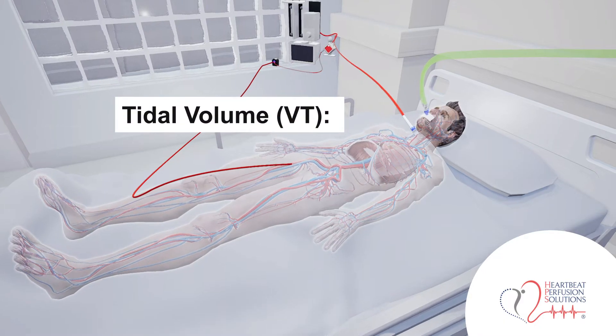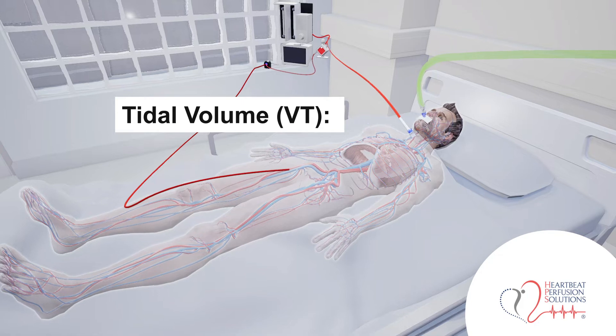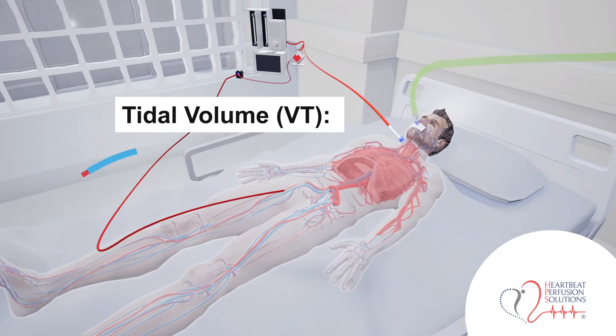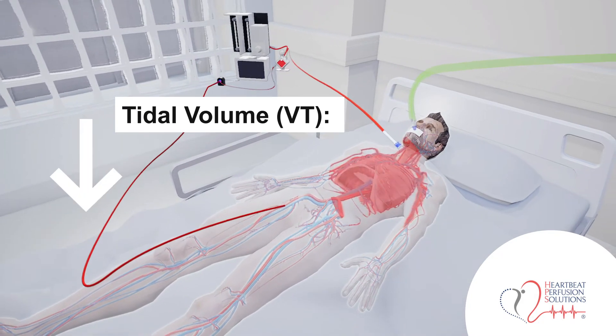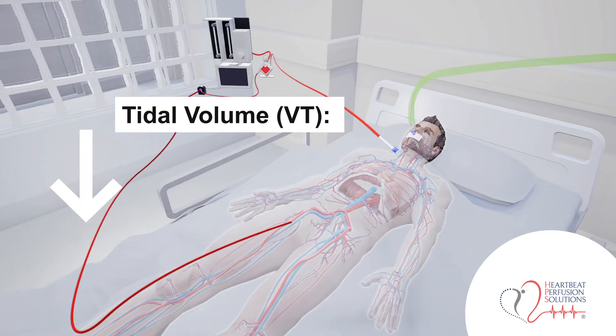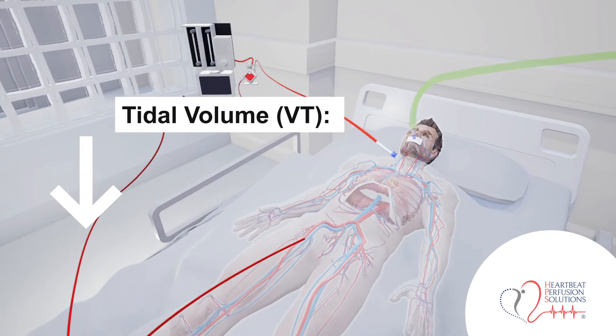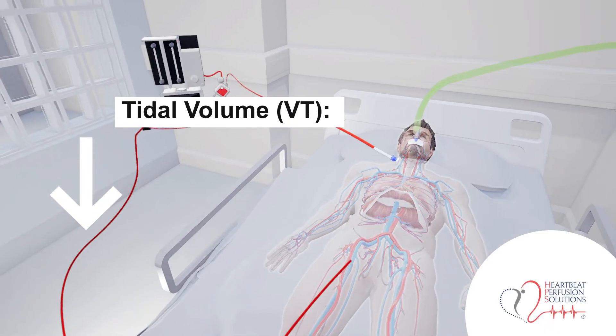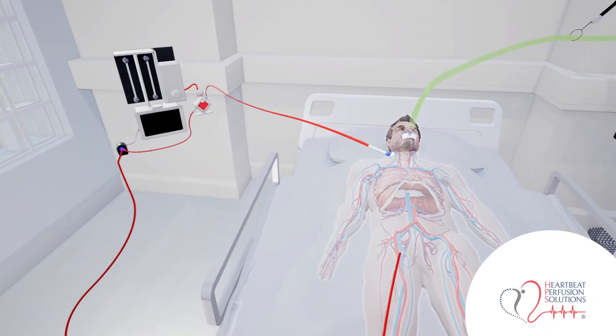Tidal volume, also known as VT: the tidal volume on the ventilator may be adjusted based on the patient's lung condition, but it is often set to lower levels than conventional ventilation.